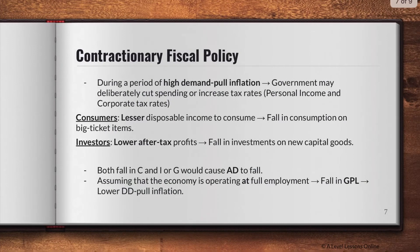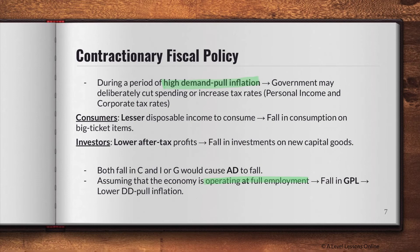Contractionary fiscal policy is the opposite — it contracts the economy, meaning AD will fall. This is used to curb demand-pull inflation when inflation rates are high. We assume the economy is operating at full employment, where a fall in AD leads to a beneficial outcome. If the economy were operating below full employment, a fall in AD would trigger a reverse multiplier effect, causing real GDP to fall by a greater extent, which is not desirable. The government may deliberately cut spending or increase personal income and corporate tax rates.